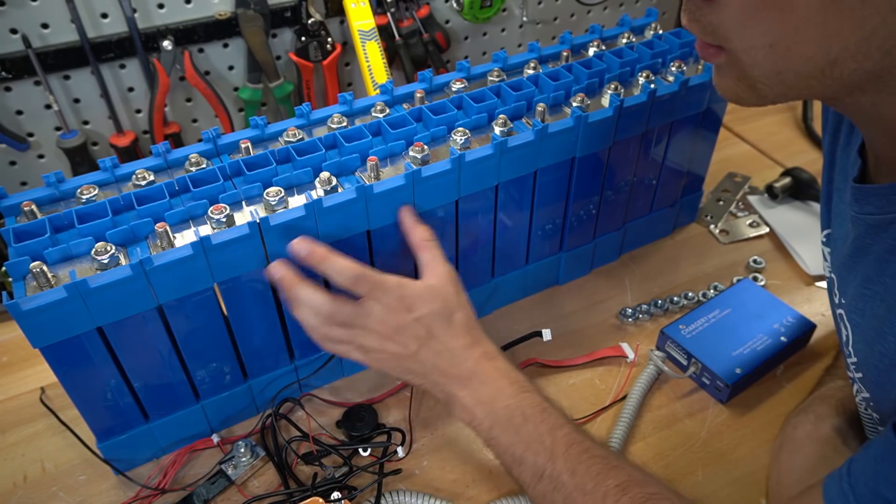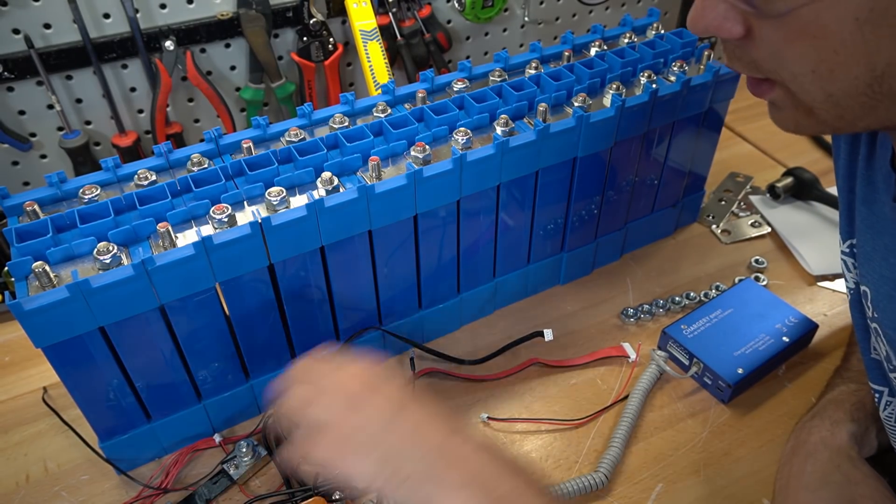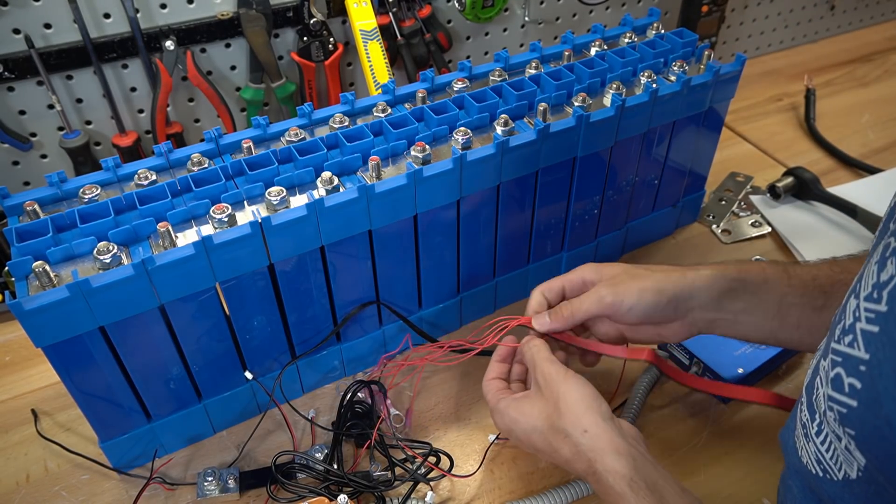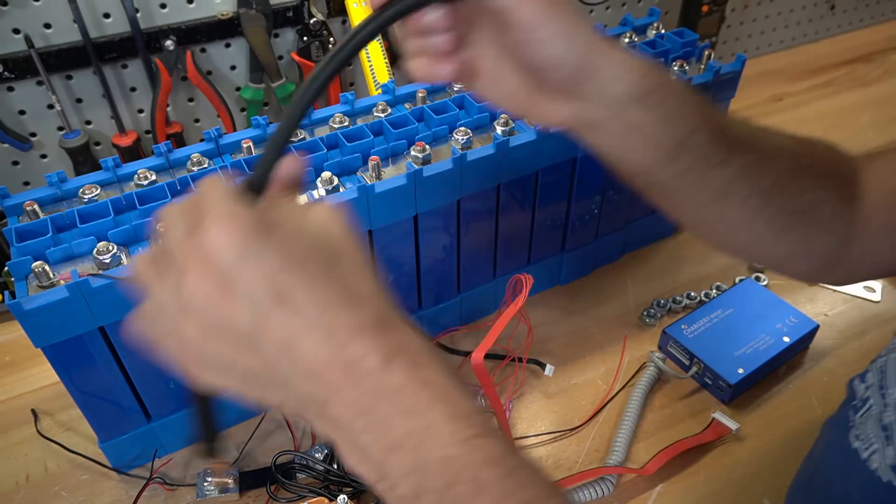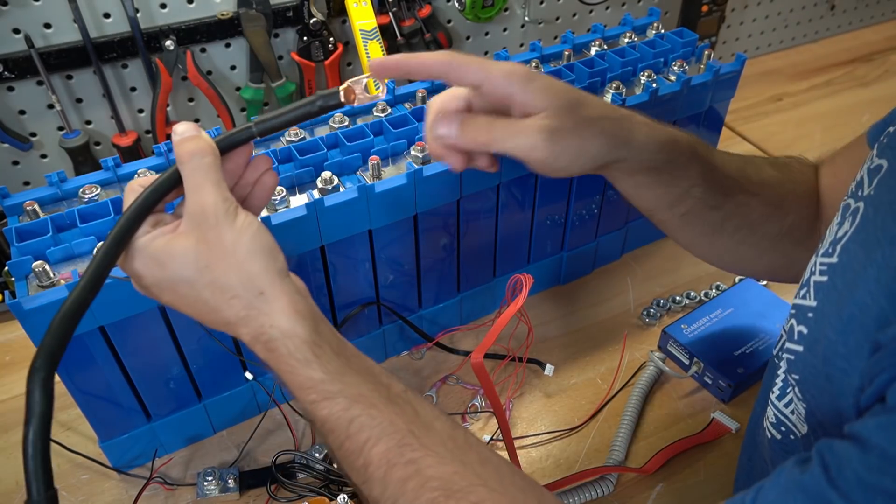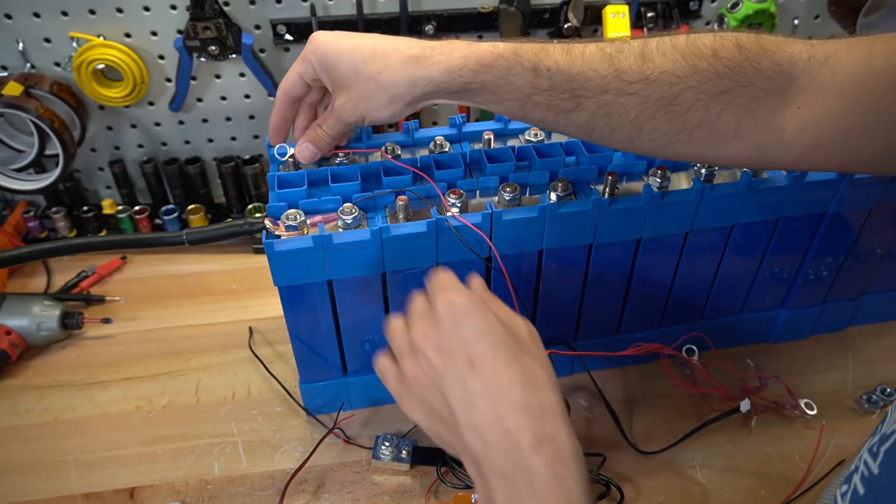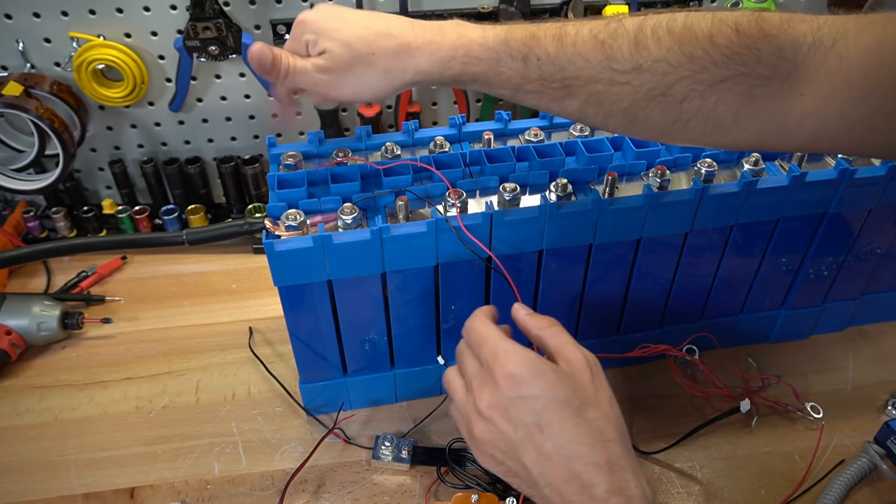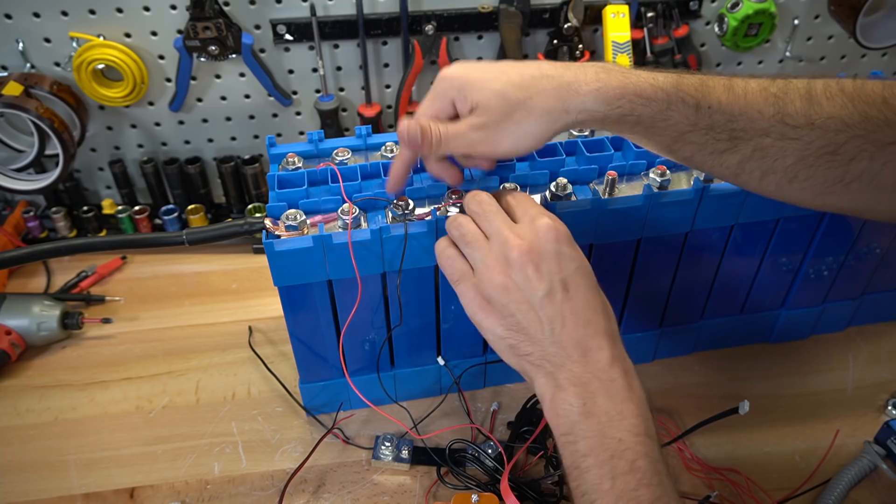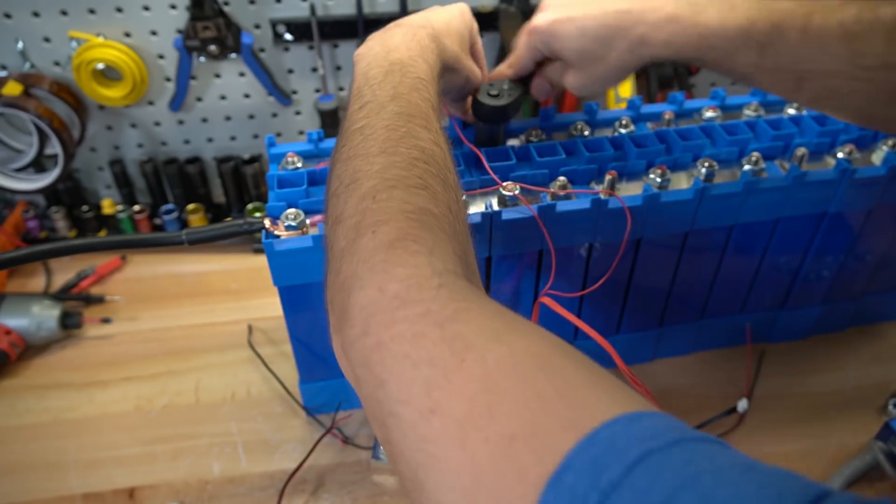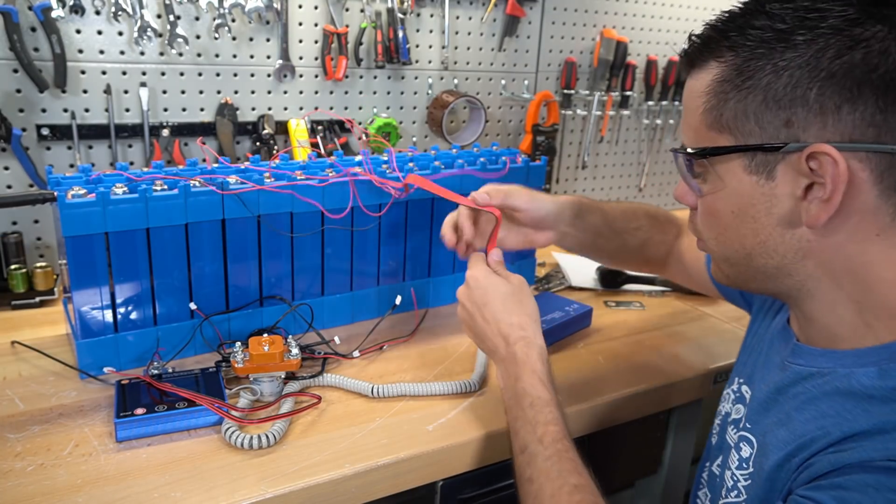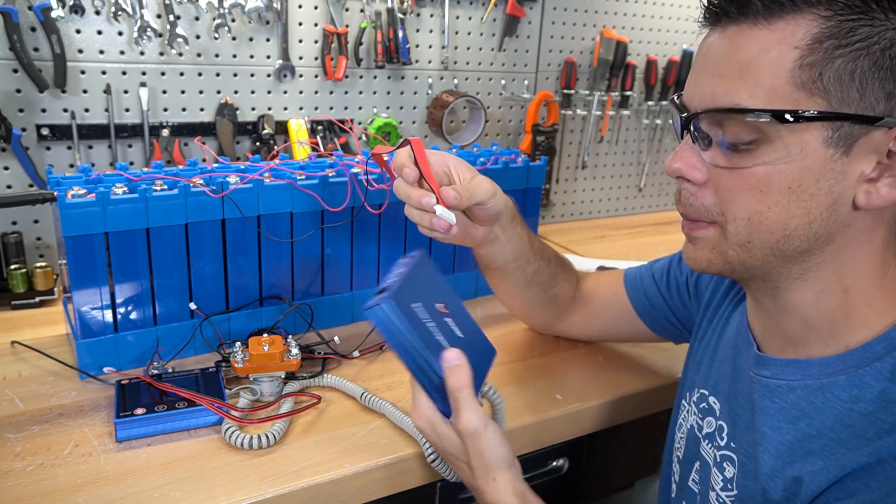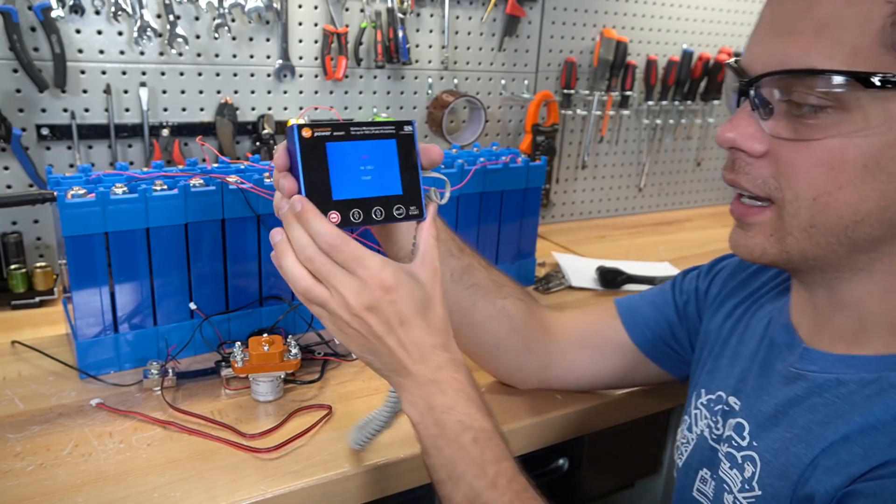Now that the cells are connected in parallel in series we can add our balance cable. First we're going to start at the negative or the black wire and that will be the first cell negative. We're also going to add a main negative cable that can go out to the shunt. Now we're going to do first cell positive and second cell positive and so on. Now our balance cable is connected and we can connect it to our BMS module. And check it out, it turned on.